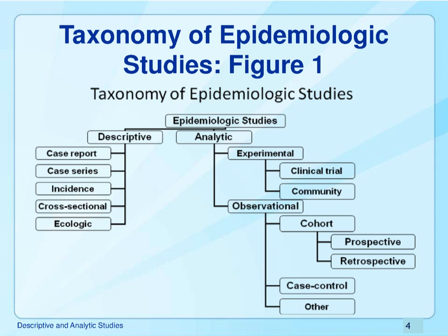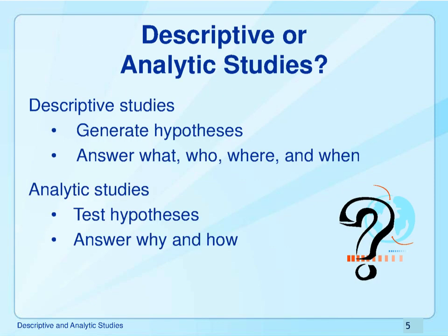Here we see a list of the different types of epidemiological studies, broken down into descriptive types and analytical types, each further subdivided. Descriptive studies are used to describe an event in the population by the variables of person, place, and time. They answer what, who, where, and when — but not why and how. That's where analytical studies come in. Once we have descriptive information we can begin to generate hypotheses about why a disease is happening in a specific population.